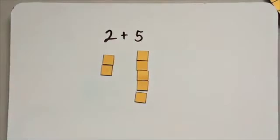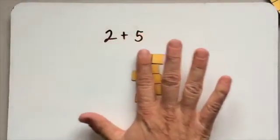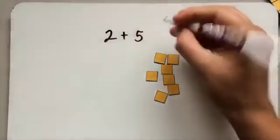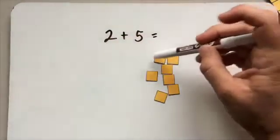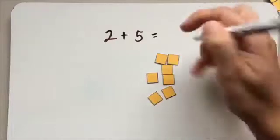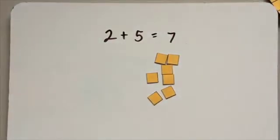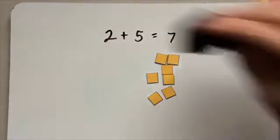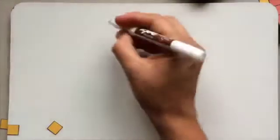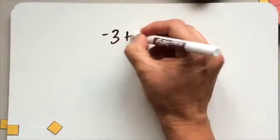Alright, and to add them together, we're just combining them. We're taking the two, we're combining it with the five, and we're figuring out what we have all together, which is one, two, three, four, five, six, seven. Hopefully you already knew that. Okay, so when they're all positive, it's very straightforward. It gets more confusing when we bring in negative numbers. So let's do that now.